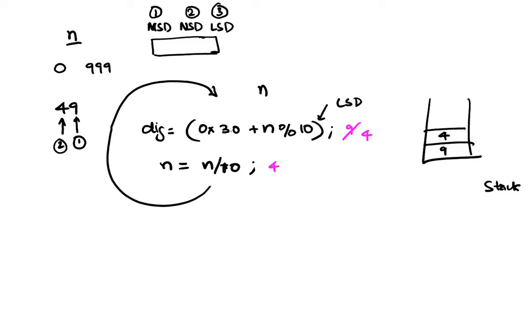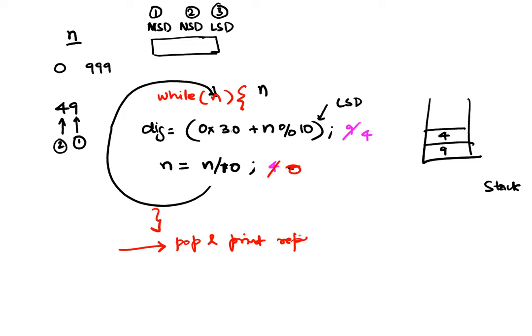The loop continues while N is not equal to zero. When N becomes 0, exit the loop. Then pop the digits one after the other and print them — this naturally reverses the order, giving the correct most-significant-first display. You need to remember how many digits were pushed on the stack so you can pop exactly that many and print them. This approach correctly handles numbers of any length without leading zeros.